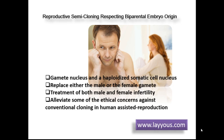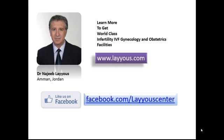Reproductive semi-cloning respects biparental embryo origin. Embryos might result from syngamy between a gamete nucleus and a haploidized somatic cell nucleus, and the somatic cell may replace either the male or female gamete — a potentially applicable technique in the treatment of both male and female infertility. There is controversy about haploidization and it will require more research. Though sharing some features with conventional cloning, the technique is biologically closer to normal fertilization, because the future individual results from the union of two parental genomes, which would alleviate some ethical concerns raised against conventional cloning in human assisted reproduction.